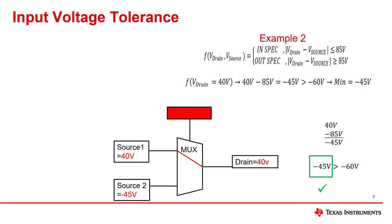Example 2, between the source pins and one or more drain pins. For example, if the channel connecting source 1 is on, and the voltage on the source 1 pin is 40 volts, in this case the drain voltage is also 40 volts. The maximum negative voltage on the source 2 pin is negative 45 volts, to maintain the 85 volt maximum rating across the source pin and drain pin.